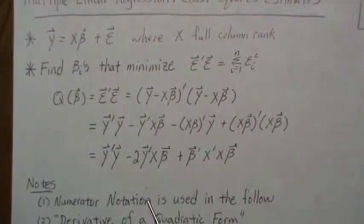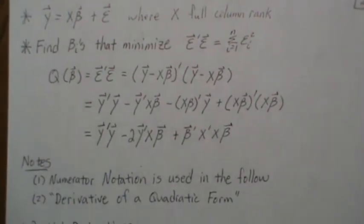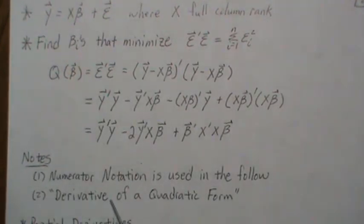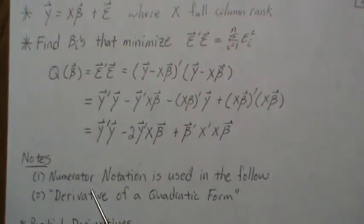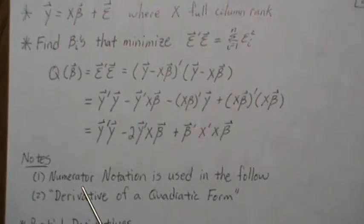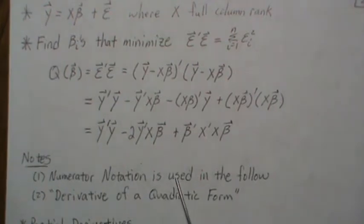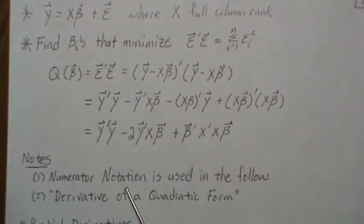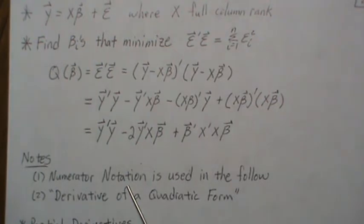Now we're going to take the partial derivatives of this with respect to beta. One thing I want to highlight for the statistical community: when we take partial derivatives or derivatives of matrices, we should specifically write down what type of notation we're using. There's numerator notation and denominator notation, and some use a mixed notation. I'm using numerator notation. I say that because I often get comments that results are off by a transpose — that's because others are used to denominator notation.